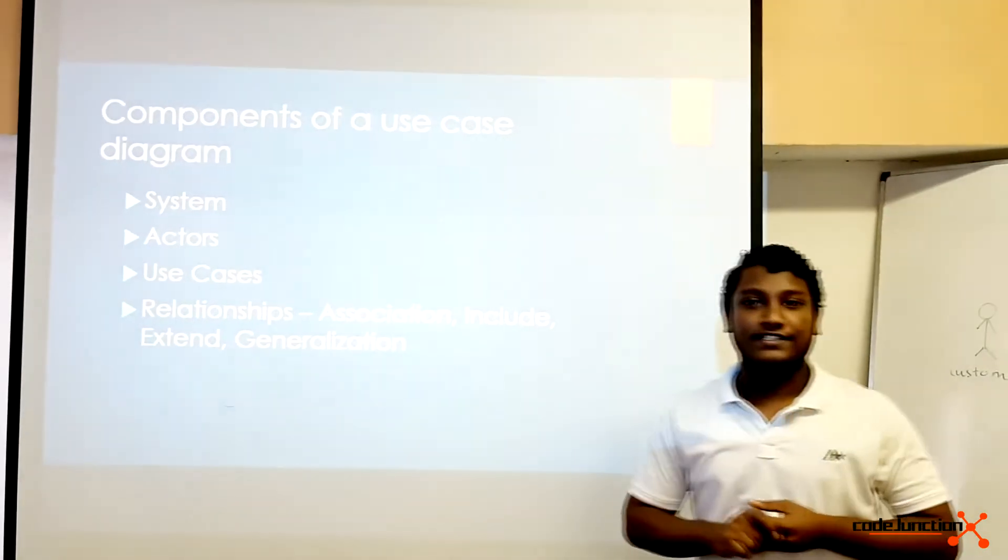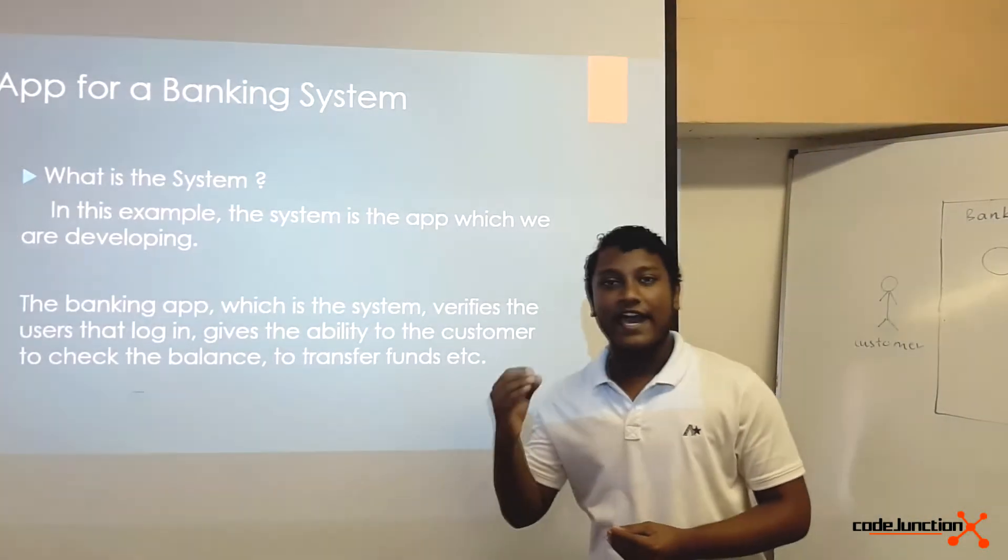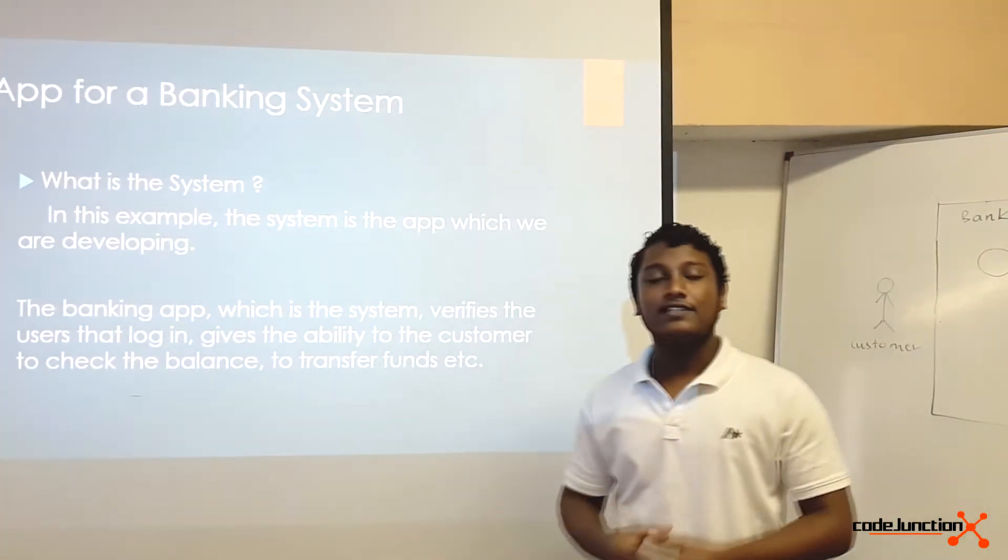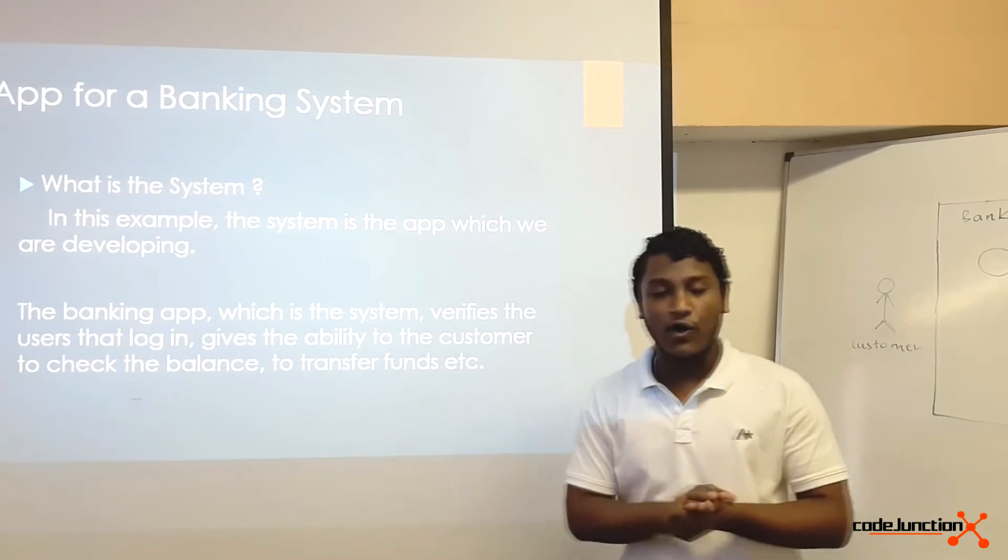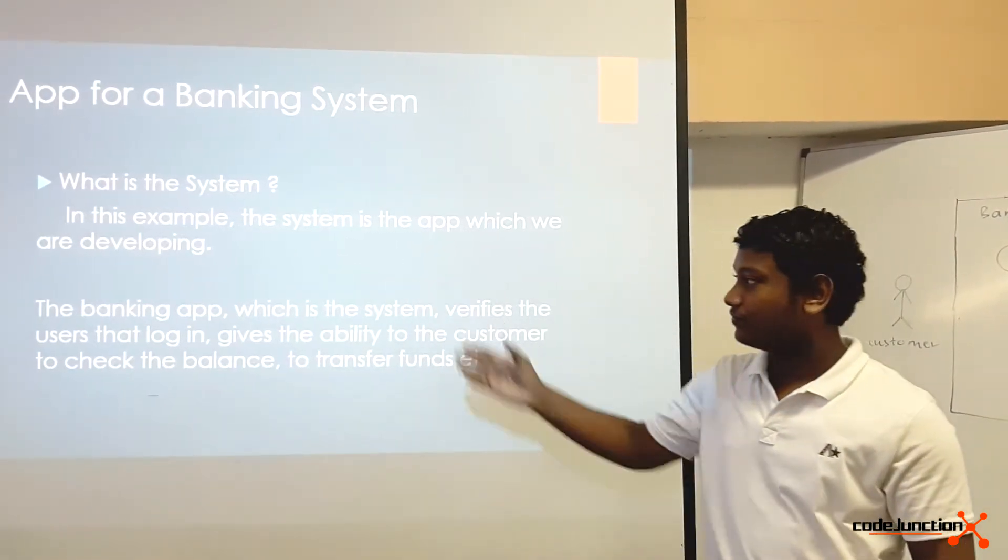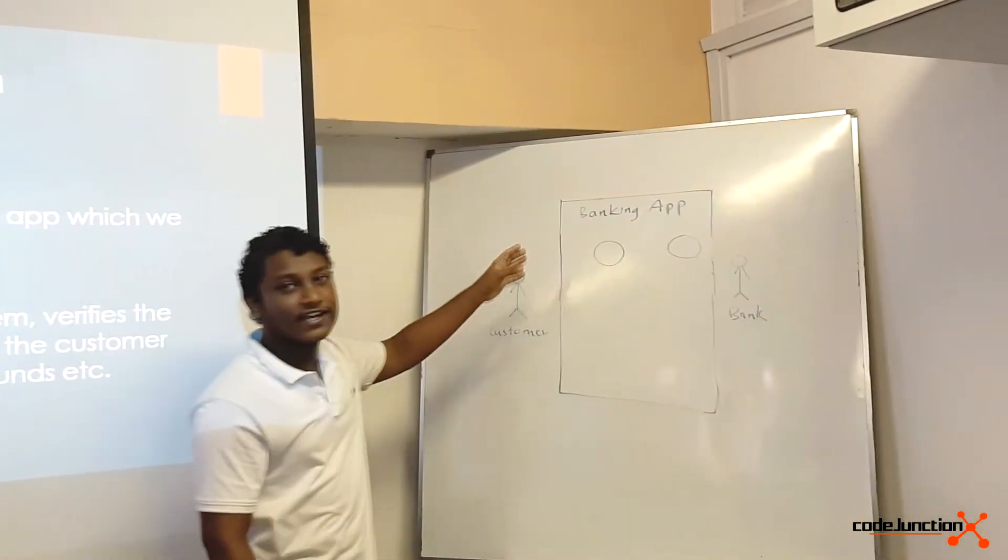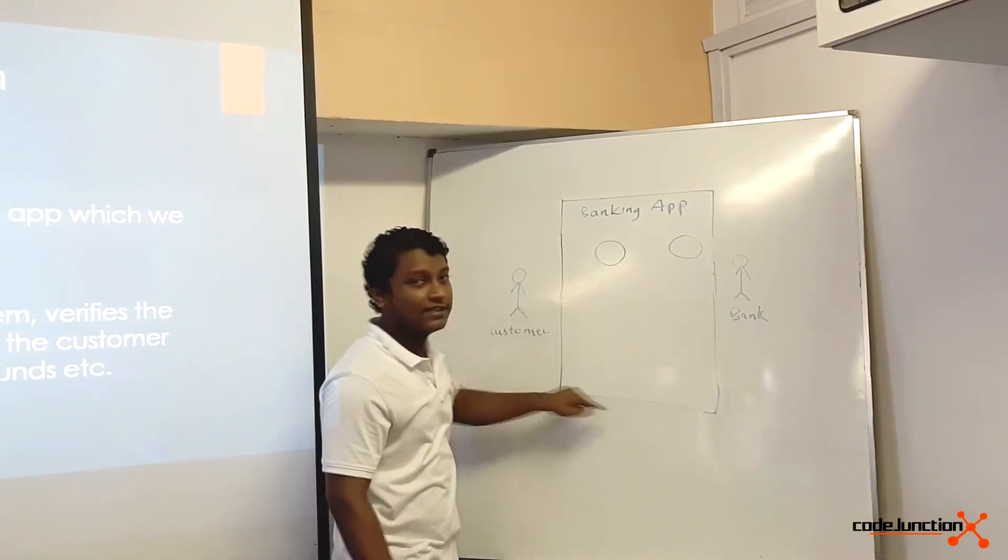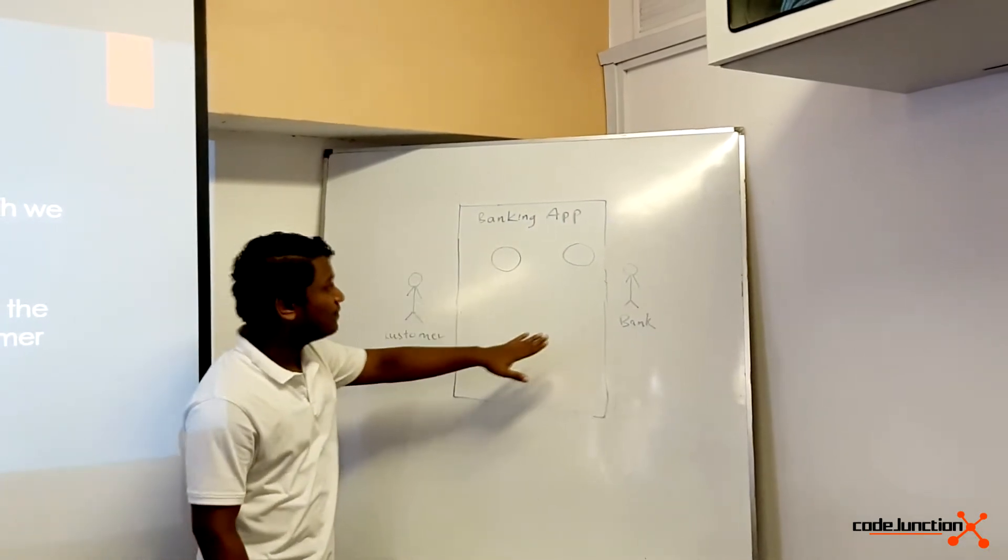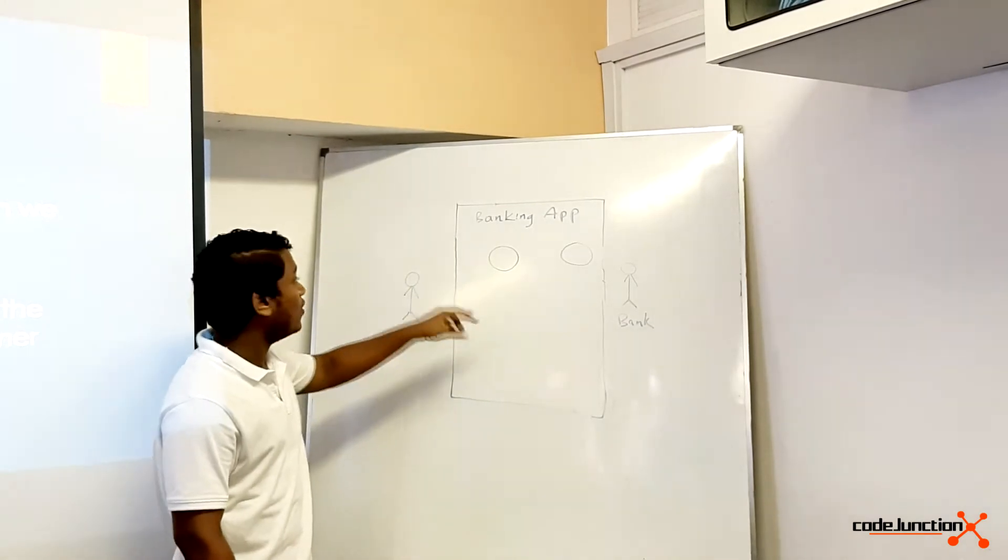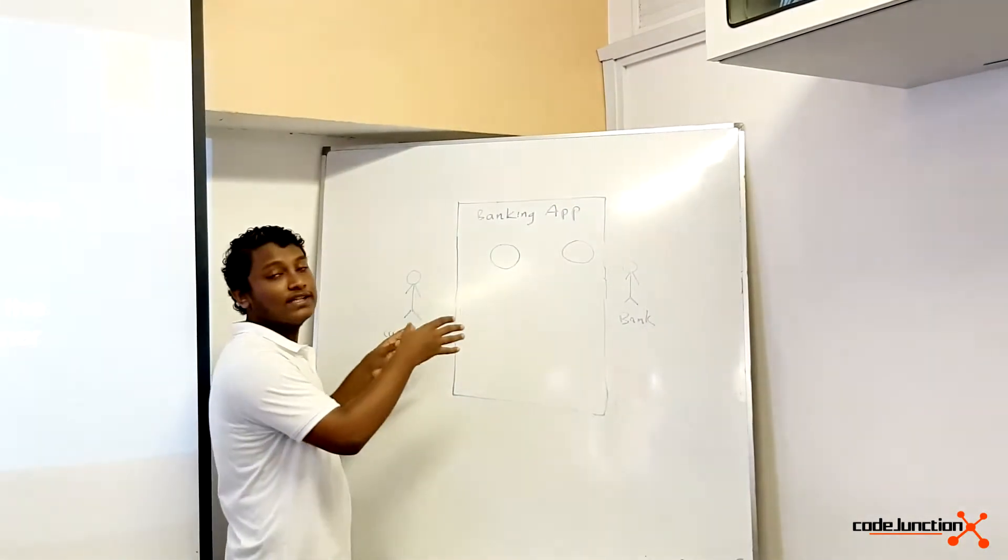Let's take a real-life example: an app for a banking system. A system is a collection of all the components that are interrelated to achieve a common goal. In this case, the system is a banking app, and this is how we represent it in use case diagrams. This is the system boundary. All the components inside the system boundary are related to the system, and all the components outside the system boundary are external entities which interact with the system.